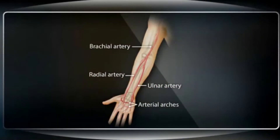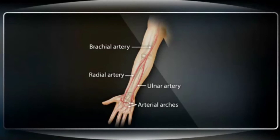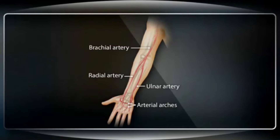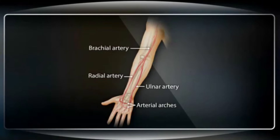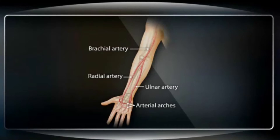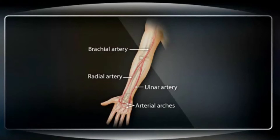To assess the pulse in arteries of the arms, there are three locations which are palpable. The first is the brachial artery, which is above and at the end of the elbow, medial to the bicep tendon and muscle. Second is the radial artery, located at the lateral ventral surface of the wrist, and the ulnar artery, located at the medial ventral surface of the wrist. The arterial arches interconnect the radial and ulnar arteries, helping to protect hand and finger circulation from arterial occlusion.